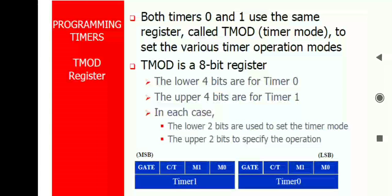Both Timer 0 and Timer 1 use the same register to control the mode operations. There are four mode operations in a timer. The mode operations can be controlled by the Timer Mode register (TMOD) to set the various timer operation modes. The timer mode register is an 8-bit register, byte addressable. The lower 4 bits are assigned for Timer 0 and the upper 4 bits are assigned for Timer 1. It consists of M0, M1, C/T, and Gate terminals.